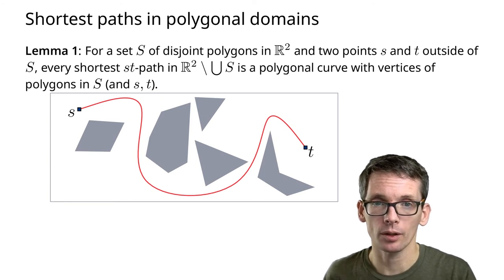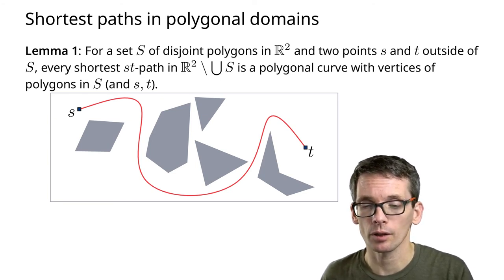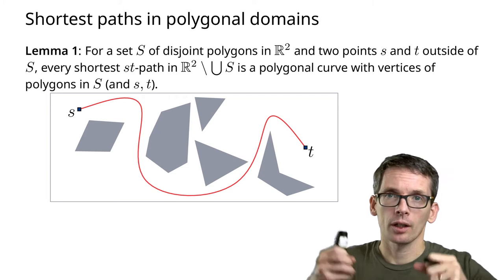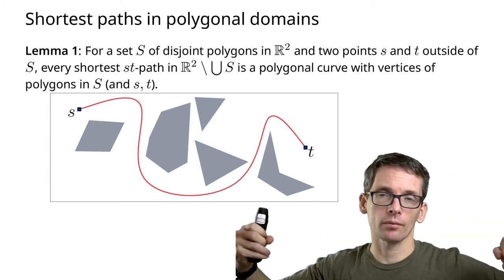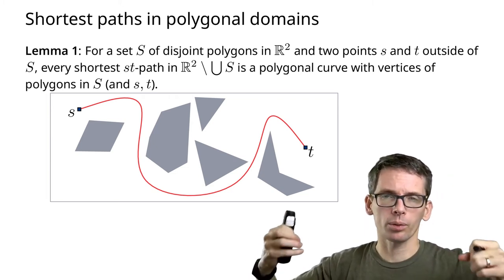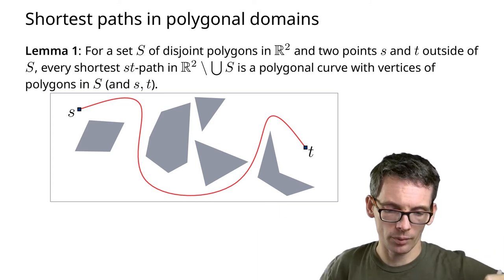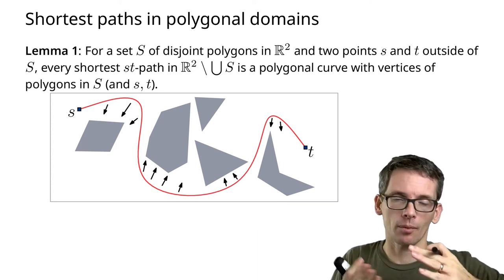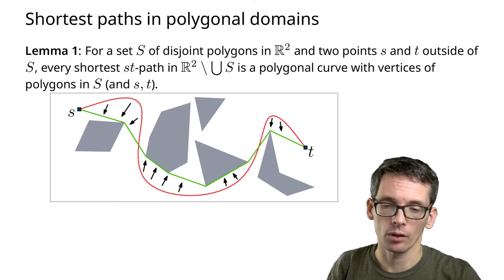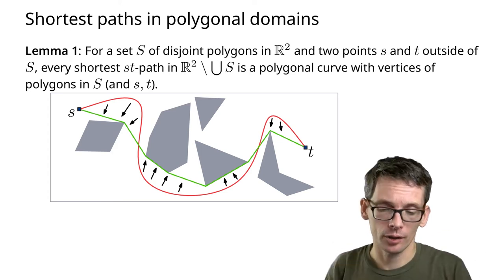it will be a polygonal curve consisting of, it will start at s, it will end at t and all other vertices or intermediate vertices will be vertices of the obstacles. How can we see that? Let's say this is a path from s to t, not yet the shortest path.